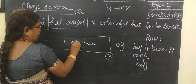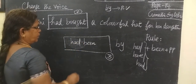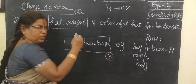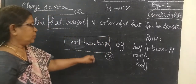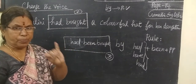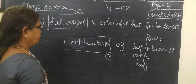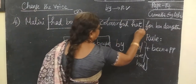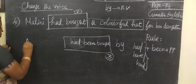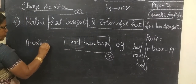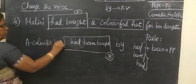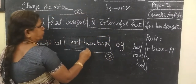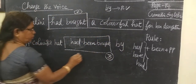Had, then 'been,' then the third form — the past participle. So you substitute 'been' and place the third form. The answer is: The colorful hat has been bought by Malini.